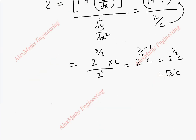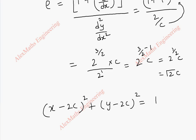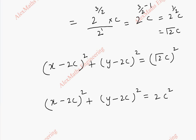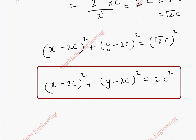Now substituting into the circle of curvature formula with x̄ = 2c, ȳ = 2c, and ρ = √2·c: we get (x − 2c)² + (y − 2c)² = ρ². Squaring ρ gives (√2·c)² = 2c². So the final answer is (x − 2c)² + (y − 2c)² = 2c². This is our required circle of curvature.